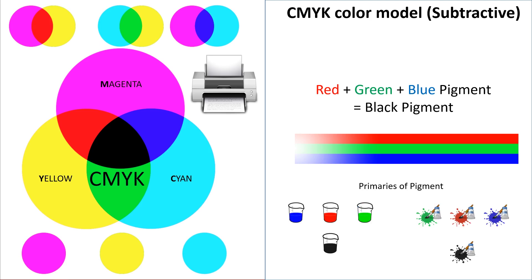As opposed to CMYK, the CMYK subtractive color model works in terms of pigment. In this model, combining red, green, and blue gets us black. So unlike light, which is additive and adds up to white, pigments are subtractive and combine into black. We see subtractive color mixing every day in things like ink and paint — for example, if you mix red, green, and blue paint, you'll get black.